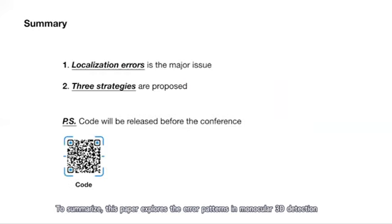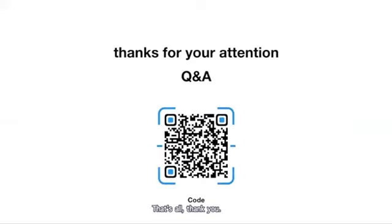To summarize, this paper explores the error patterns in the monocular 3D detection and finds the localization error is the bottleneck of this task. Besides, we also analyzed what makes the localization errors and proposed three strategies accordingly to improve the performance. By the way, our code will be released before the conference. That's all. Thank you.